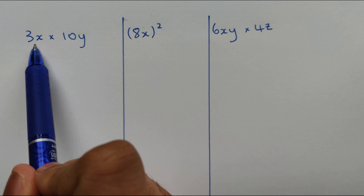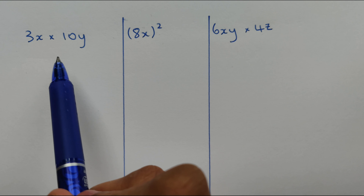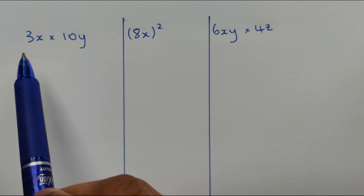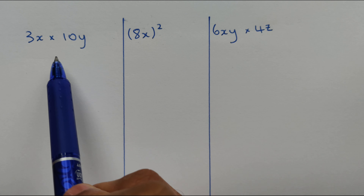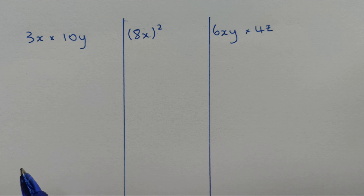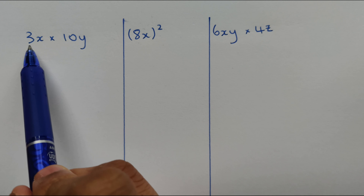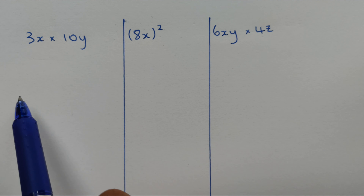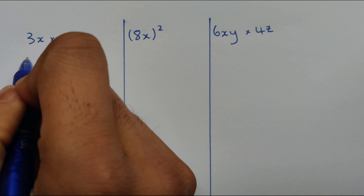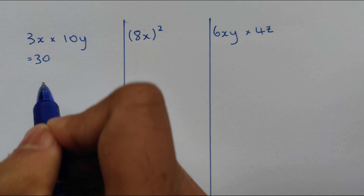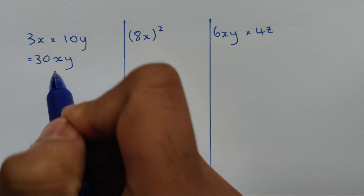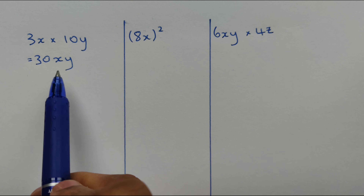Let's start with 3x times 10y. When we're multiplying algebraic expressions together we don't need to identify like terms like we did when we added and subtracted algebraic expressions. To solve 3x times 10y, let's start with the coefficients: 3 times 10 equals 30, and then x times y is xy. So our answer is 30xy.